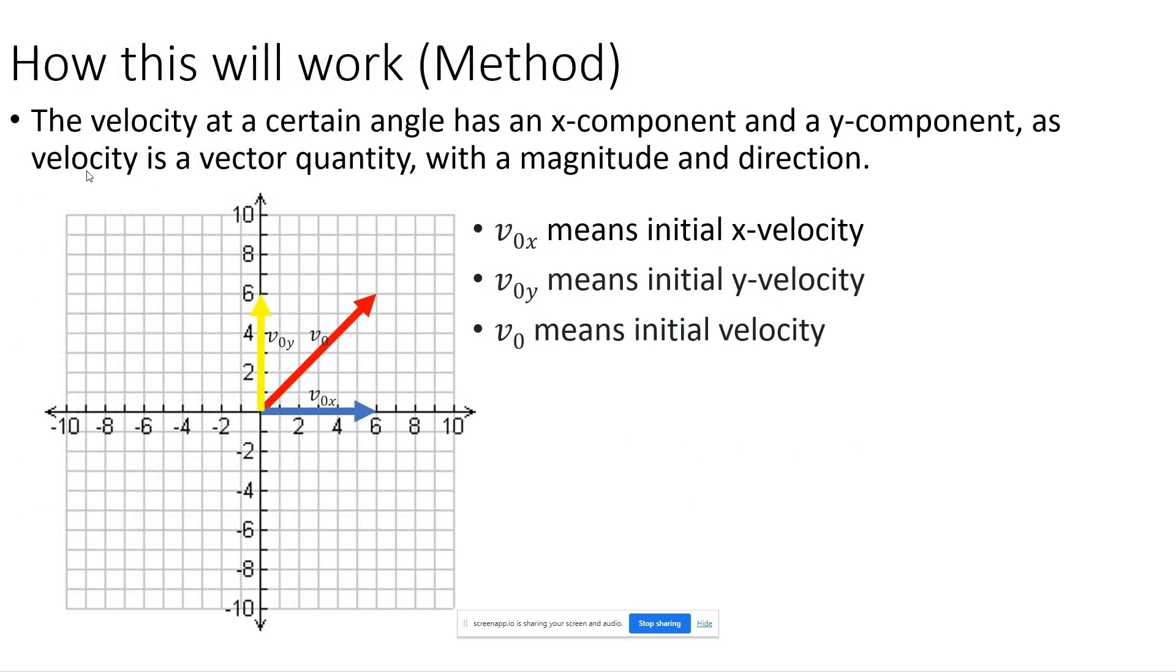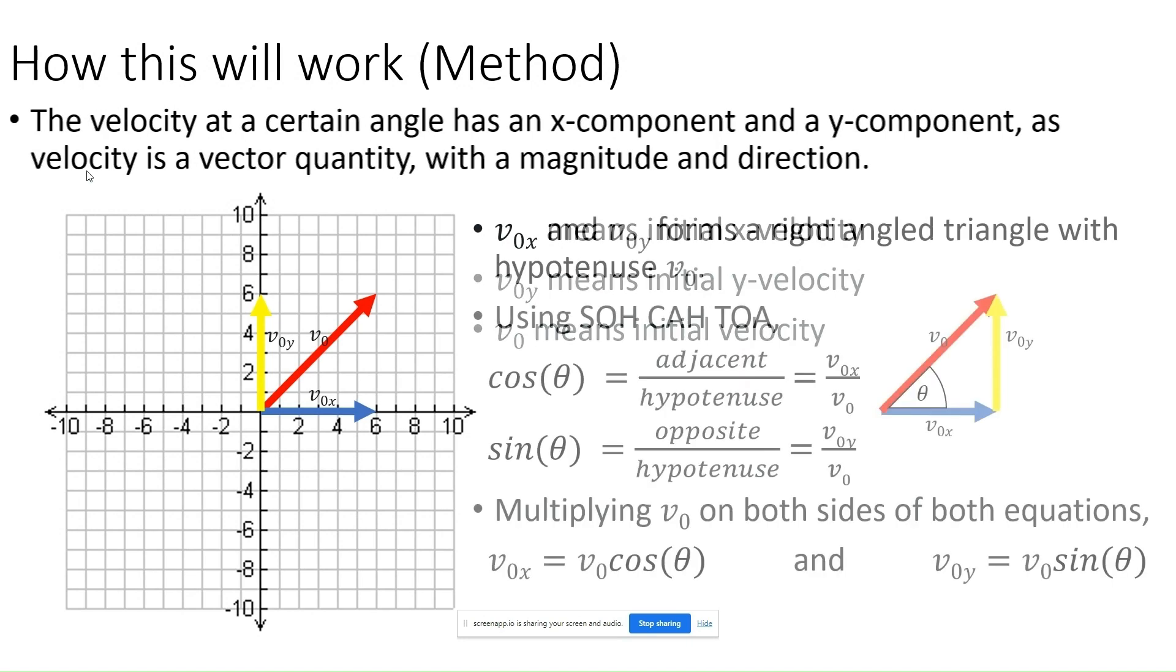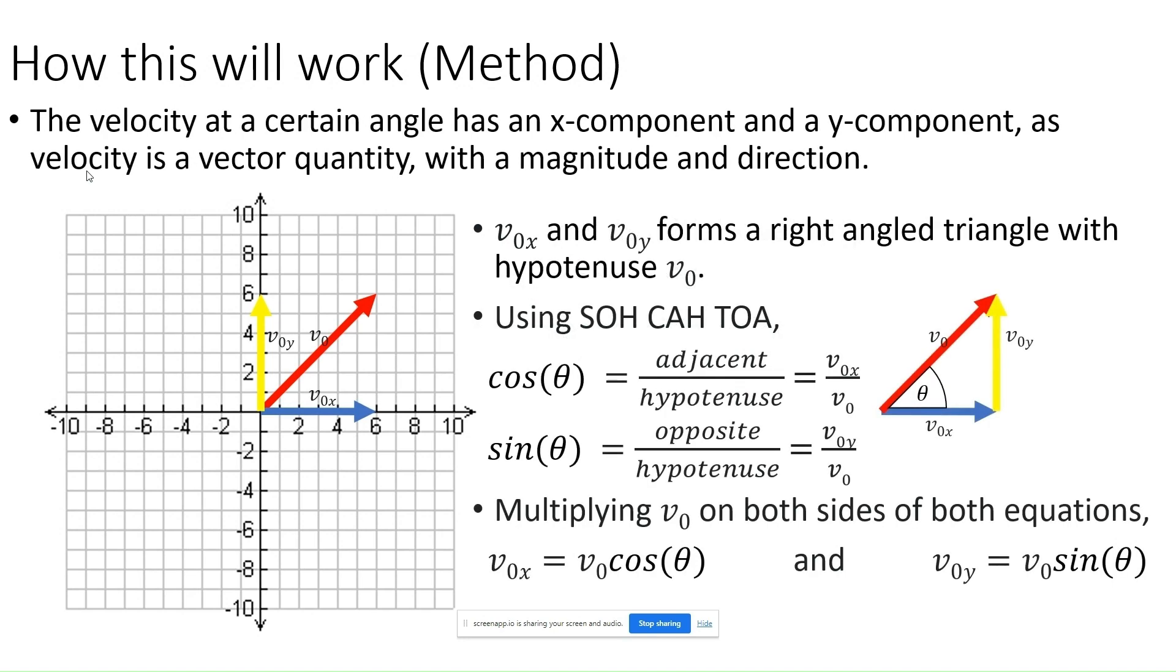Those are the definitions of all the subscripts and symbols. The initial x velocity is the initial velocity times the cosine of theta. Likewise, the initial y velocity is the initial velocity times the sine of theta.